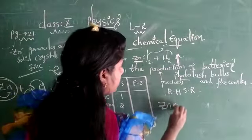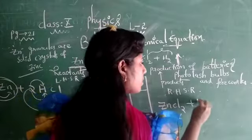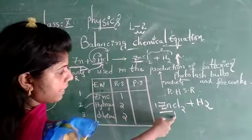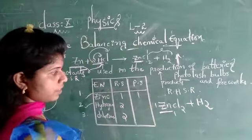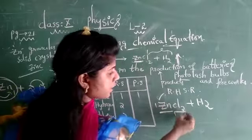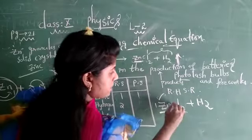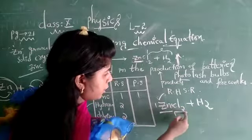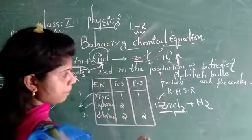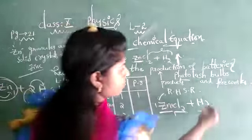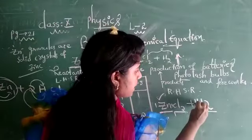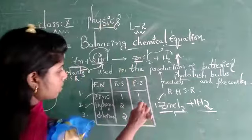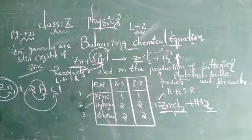Similarly, check the product side. Near the zinc there is no number, so multiply with 1 — 1 zinc is completed. Near the chlorine, the subscript is 2 but there is no coefficient, so replace with 1: 1 into 2 gives 2 chlorines. Near the hydrogen, the subscript is 2 and no coefficient, so replace with 1: 1 into 2 gives 2 hydrogens present.